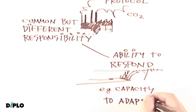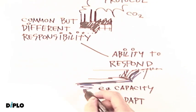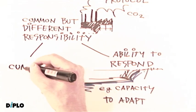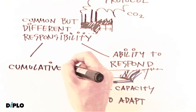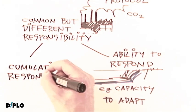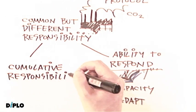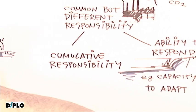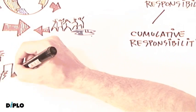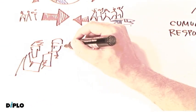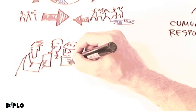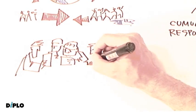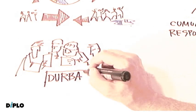So, while climate change is a common responsibility of humankind, greater responsibility to address the problem lies with those with greater cumulative responsibility and greater ability. This is the principle of common but differentiated responsibilities, a principle that forms an important part of understanding the international negotiations on climate change and its legal framework.